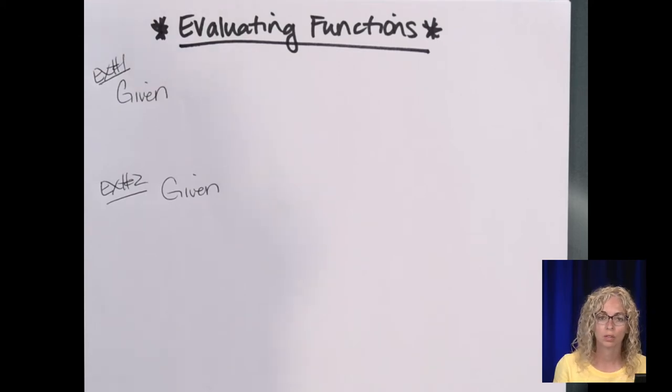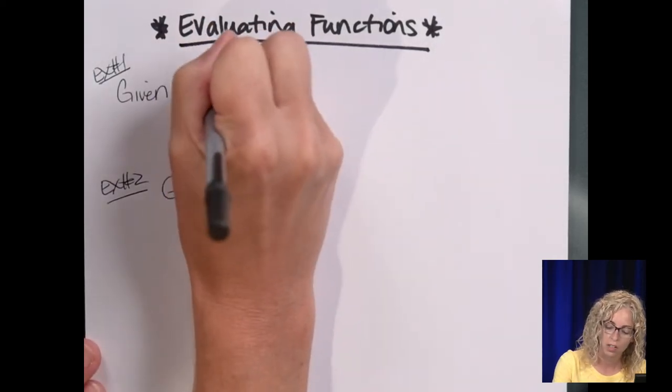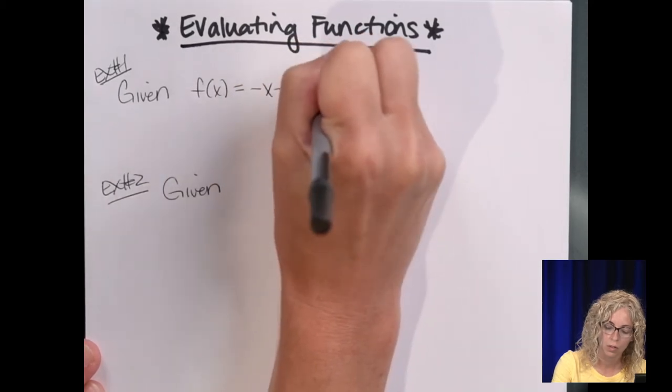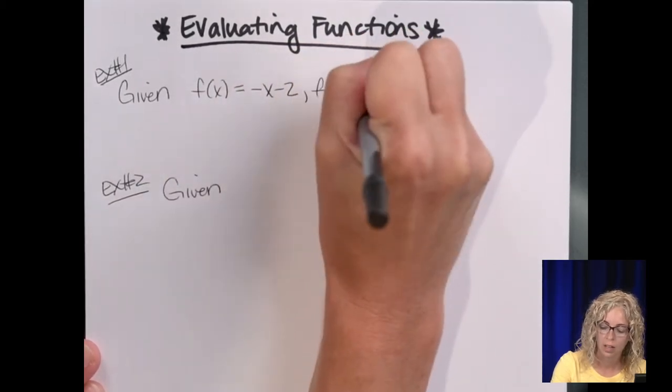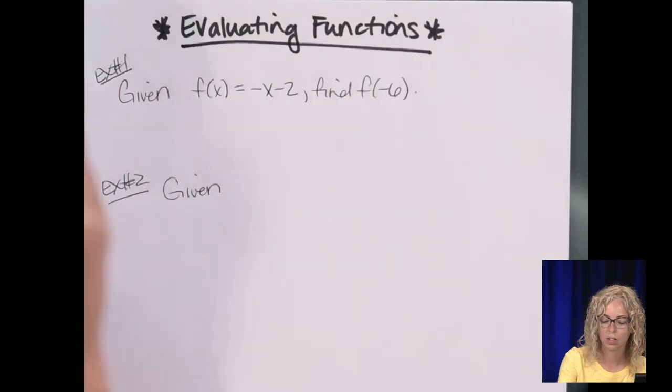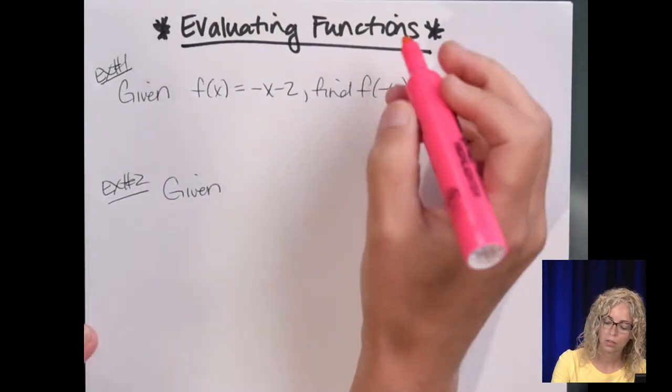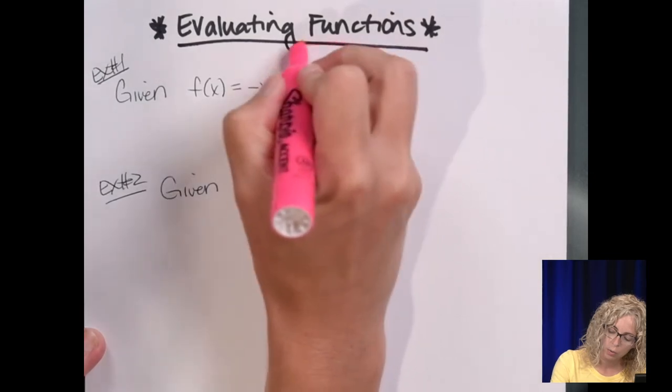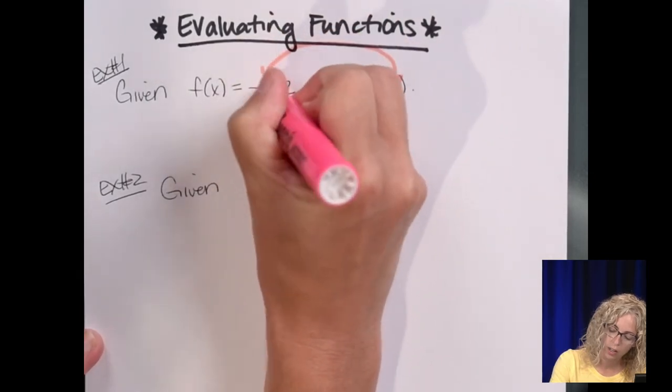So you have a level one and level two in delta math. Let's take a look at a level one. So it says given, so our function is f of x equals negative x minus two. So you find f of negative six. So all you do, so f of negative six, is you take the negative six and you plug it in for x.